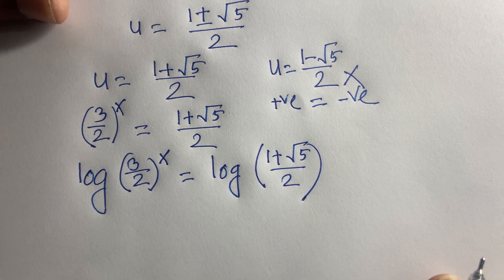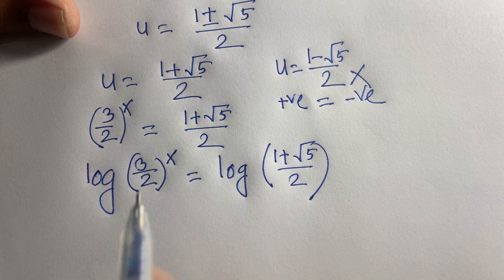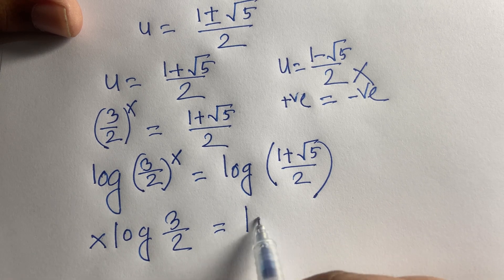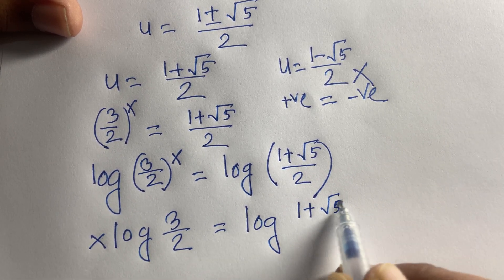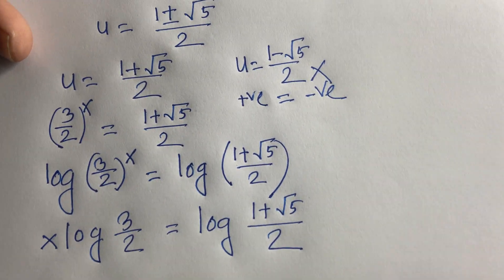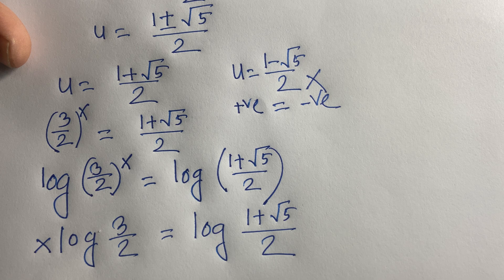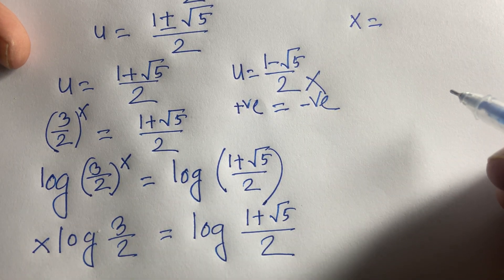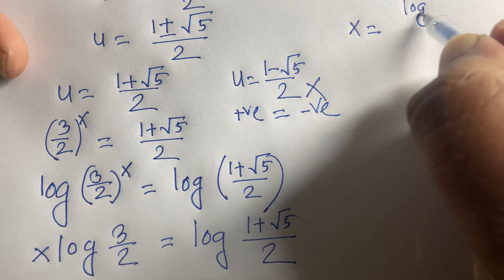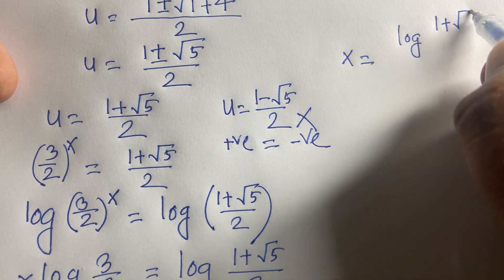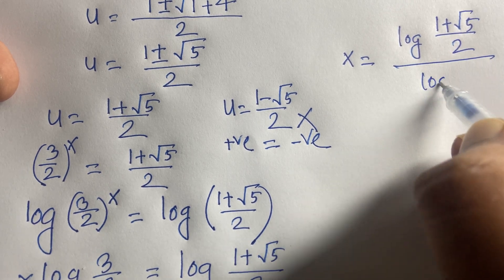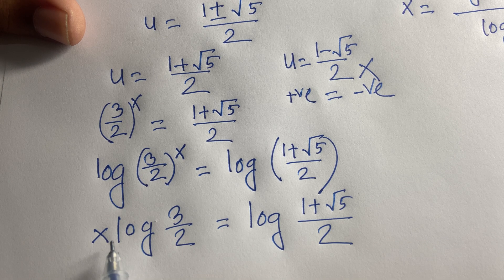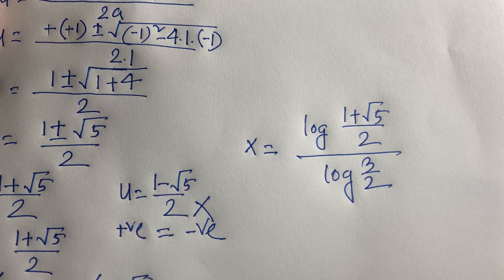According to logarithmic rules, x moves to the front: x times log(3/2) equals log((1 plus √5) over 2). Dividing both sides by log(3/2), we find x equals log((1 plus √5) over 2) divided by log(3/2), and log(3/2) cancels on the right.